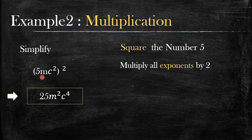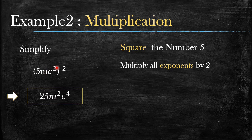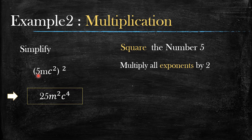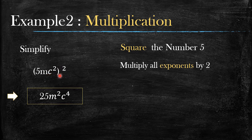For the letter parts, m has no exponent written, which means its exponent is 1. So 1 times 2 equals 2 — giving us m². Then c has an exponent of 2, so 2 multiplied by 2 equals 4 — giving us c⁴. For letter parts, you multiply the exponents. That is your final answer.